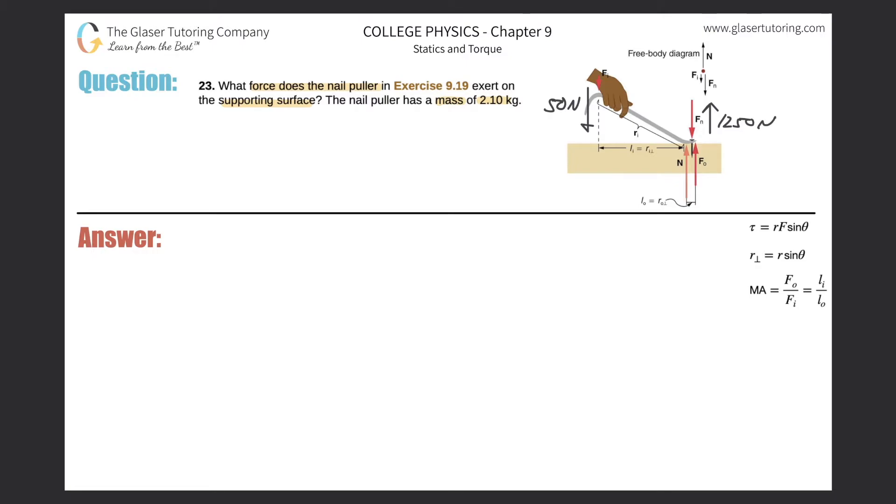They also gave us the mass of the nail puller, which experiences the force due to gravity and therefore has a certain weight pointing down. Let's calculate that: 2.1 times 9.8. The weight of the nail puller is 20.58 newtons.